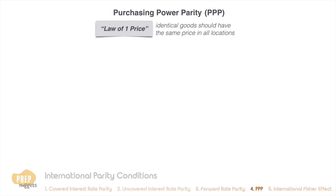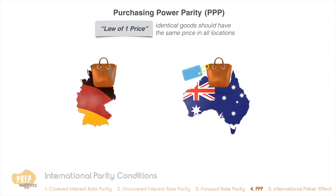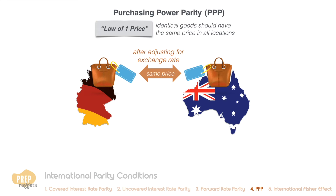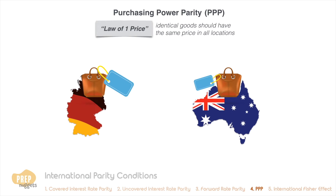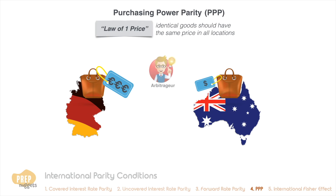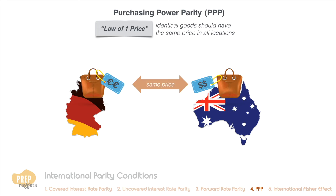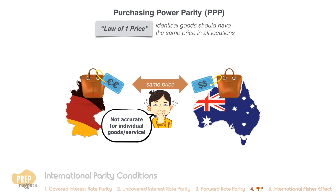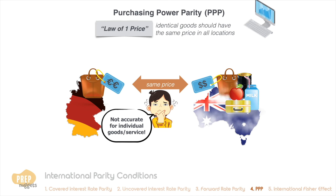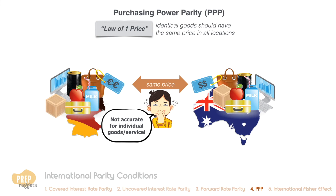For instance, a designer handbag should in theory cost the same in Australia as in Germany, after adjusting for the exchange rate. The foundation of PPP is the principle of no arbitrage: if there is a significant price difference between two countries, arbitrageurs will buy from the cheaper place to sell at the more expensive place until the price differential disappears. In practice, PPP may not hold for many individual goods or services, but it may hold for the aggregate of many goods and services.